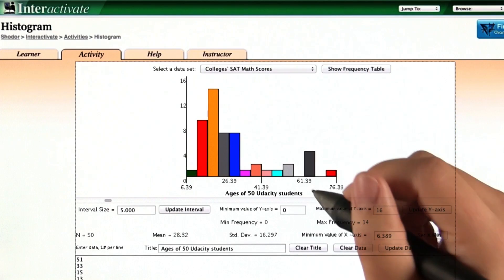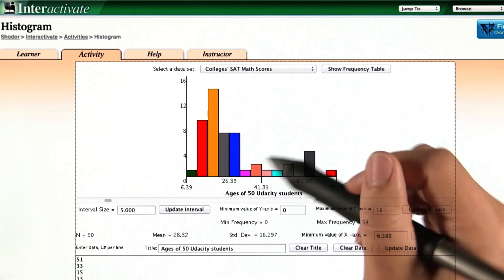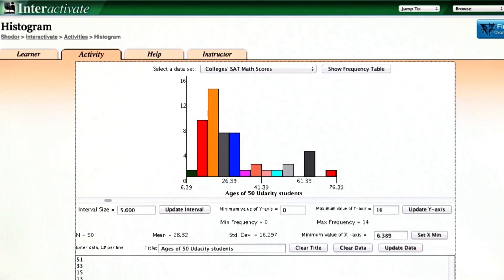You just created a histogram of bin size 20, but we can create a histogram with any bin size, or also called the interval size.